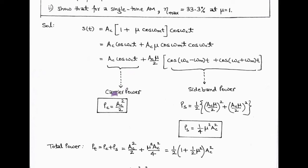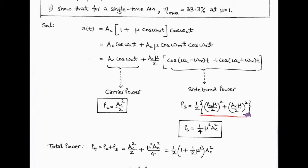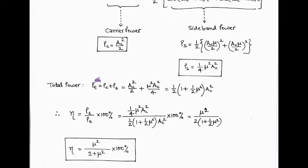To determine the carrier power, we use the first term. The carrier power P_c equals ac squared upon 2. From the second term, we can find the sideband power, which equals (1/2) times [(ac mu / 2)² plus (ac mu / 2)²], because sideband power is a combination of upper and lower sideband power, each sideband having the same amplitude ac mu / 2. So the sideband power equals (1/4) mu squared times ac squared. The total power equals carrier power plus sideband power, and it equals (ac² / 2) times (1 plus mu² / 2).